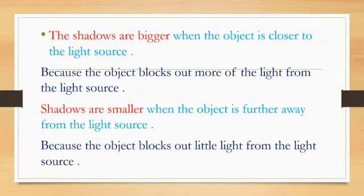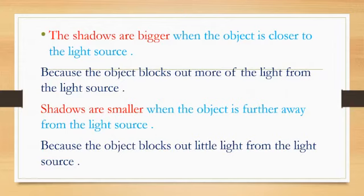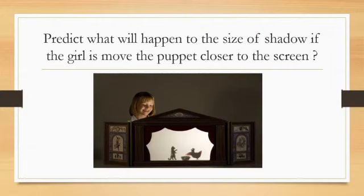Shadows are bigger when the object is closer to the light source because the object blocks out more light from the sun or from the light source. Shadows are smaller when the object is further away from the light source, because the object blocks little light from the light source.